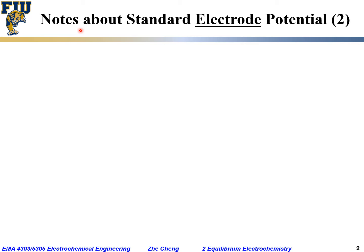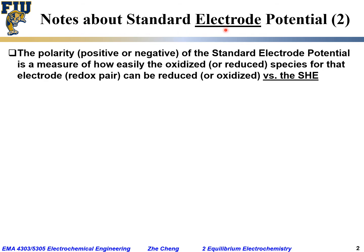A second note about standard electrode potential: the polarity — whether it is positive or negative — of the standard electrode potential for a particular electrode is a measure of how easily the oxidized species can be reduced, or the reduced species can be oxidized, versus the SHE. So the polarity is a comparison of relative ease of reduction or oxidation compared to the SHE.